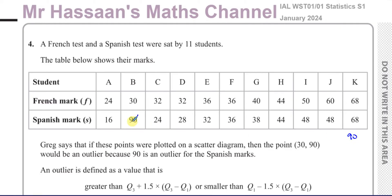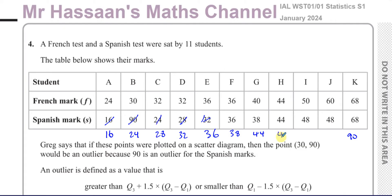So I'm going to rearrange the numbers in order of size. Starting from the lowest: 16, 24, 28, 32, 36, 38, 44, 48, 48, and 68. So we have all the numbers now in order of size, and we can determine what the outlier is.